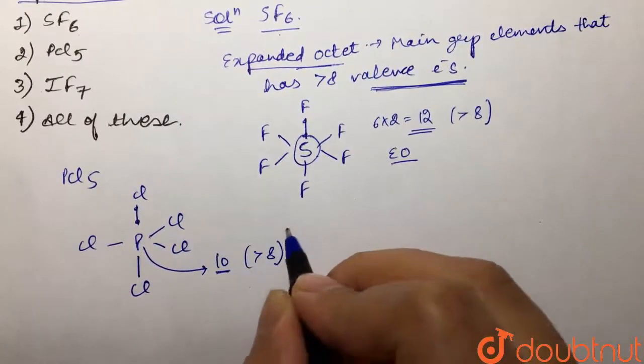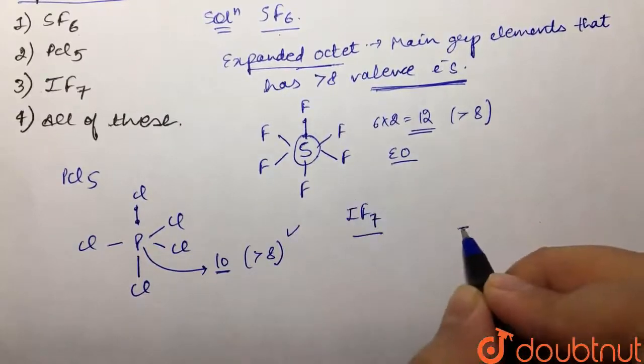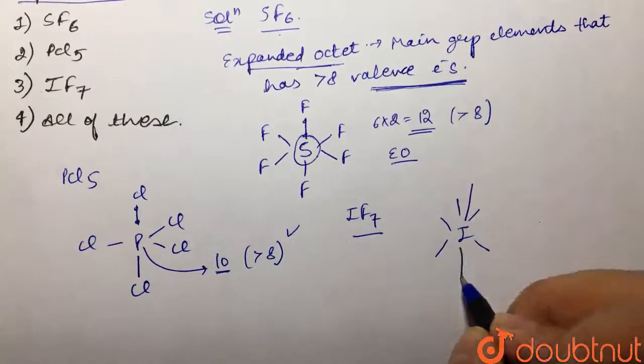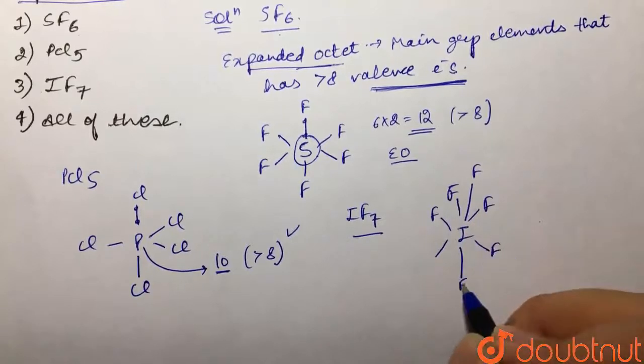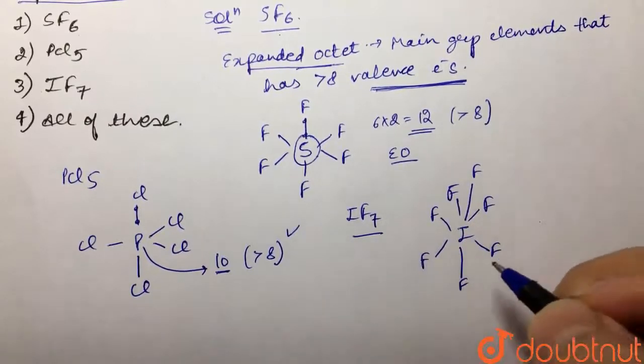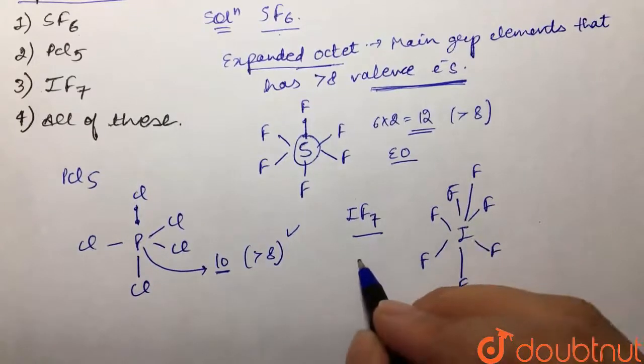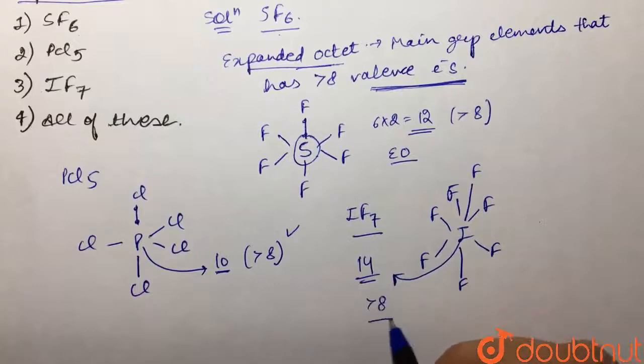Then IF7 makes seven bonds with fluorines. We have fluorine, fluorine, fluorine, and fluorine. Over here also, each bond would have two electrons and we have seven, so it has 14 electrons with it. Iodine, again greater than eight, that means this also has expanded octet with it.